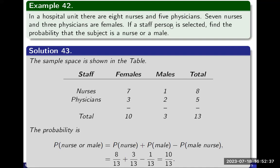The question asks: if a staff person is selected, find the probability the subject is a nurse or a male. They are not mutually exclusive because a male can also be a nurse. So the probability of nurse or male equals the probability of a nurse plus the probability of a male minus the probability of a male nurse. That's eight over 13 plus three over 13 minus one over 13, giving an answer of ten over 13.